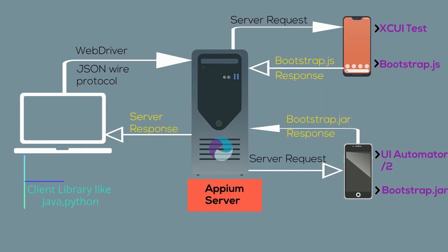Once an Appium client like Java or Python connects to an Appium server with desired capabilities as parameters and communicates through JSON Wire Protocol, the server creates a session and connects with UI Automator or UI Automator 2 for Android, or XCUITest for iOS. UI Automator or UI Automator 2 then interacts with Bootstrap.jar for Android, and XCUITest interacts with Bootstrap.js for iOS. After that, it returns the response to the Appium server, and the Appium server returns the response to the client.